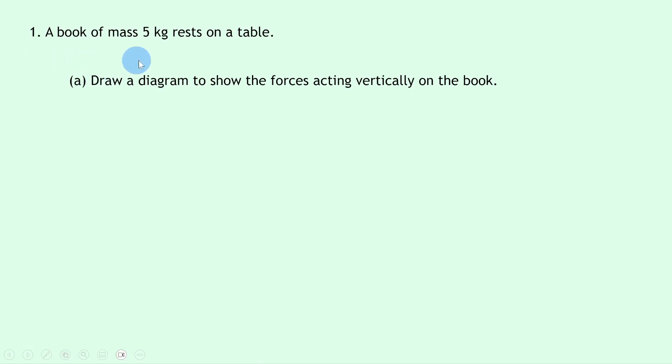So let's get started. Question 1 says a book of mass 5 kilograms rests on a table. Part A says to draw a diagram to show the forces acting vertically on the book. Well, let's draw our table first of all, and then our book on the surface of the table, and we can label the forces acting vertically.